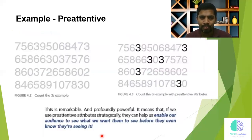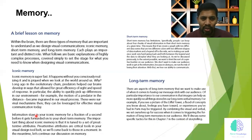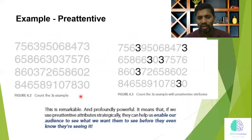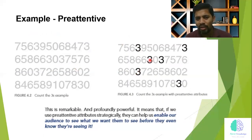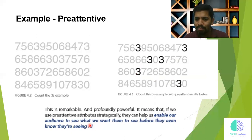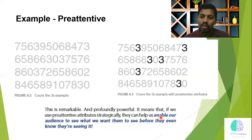This example illustrates pre-attentive attributes and iconic memory. If you have too many numbers but want the audience to focus on only one element — say the number three — you highlight it in bold. Anyone can then immediately see that there are six threes available. This is remarkable and profoundly powerful: if we use pre-attentive attributes strategically, they help our audience see what we want them to see before they even know they are seeing it.